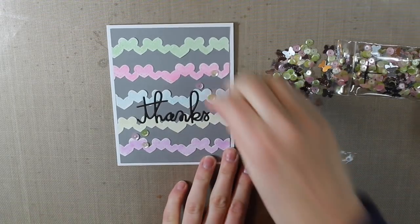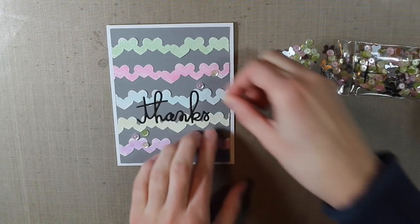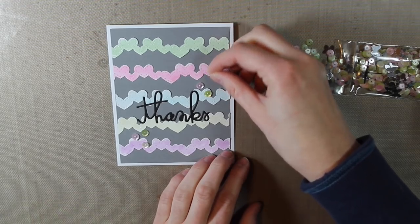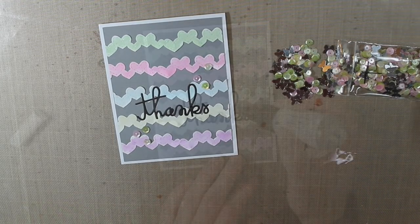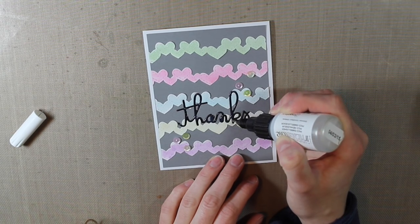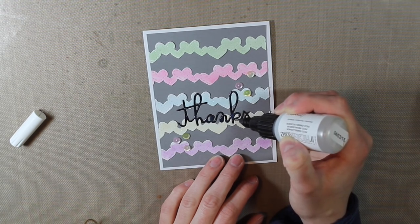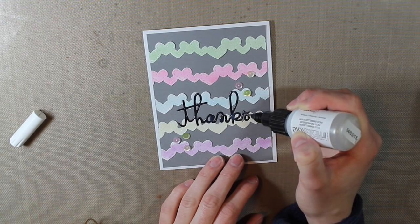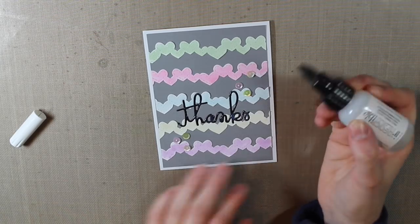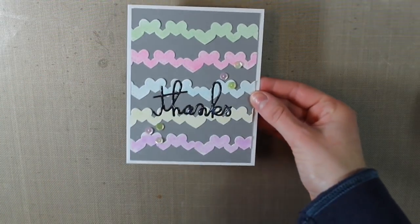For the last step, I'm going to make that Thanks die cut stand out by covering it with Clear Irresistible. If you haven't used this product before, it's like Glossy Accents but with shimmer in it, kind of like Glossy Accents and Wink of Stella mixed, except it's more liquidy than Glossy Accents. You have to be careful when using this, but the nice thing is it has a fine pointed tip, so it's easy to get into smaller areas. All the supplies I used on this card are linked below.